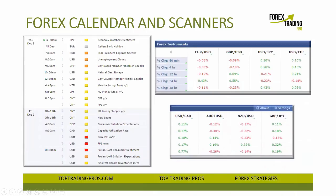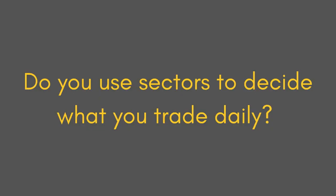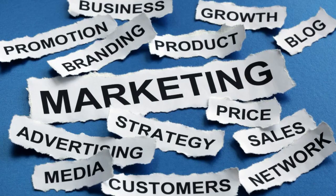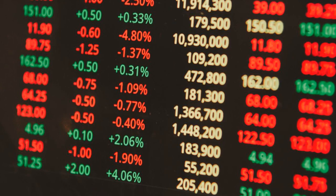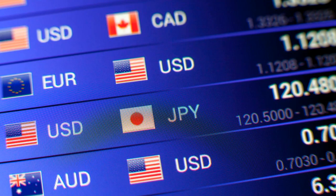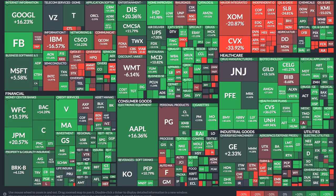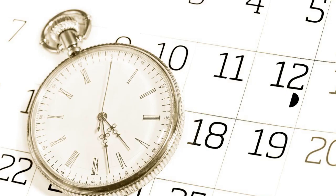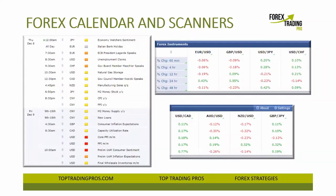Lou asks: do you use sectors to decide what you trade daily? I use something like what Pete does — he has his way of scanning the markets and looking for the best stocks on any given day. I have my own scanning process to figure out which currency pairs to trade that day. It's not necessarily sectors, but I use calendars and momentum. These are some screenshots from Forex Factory.